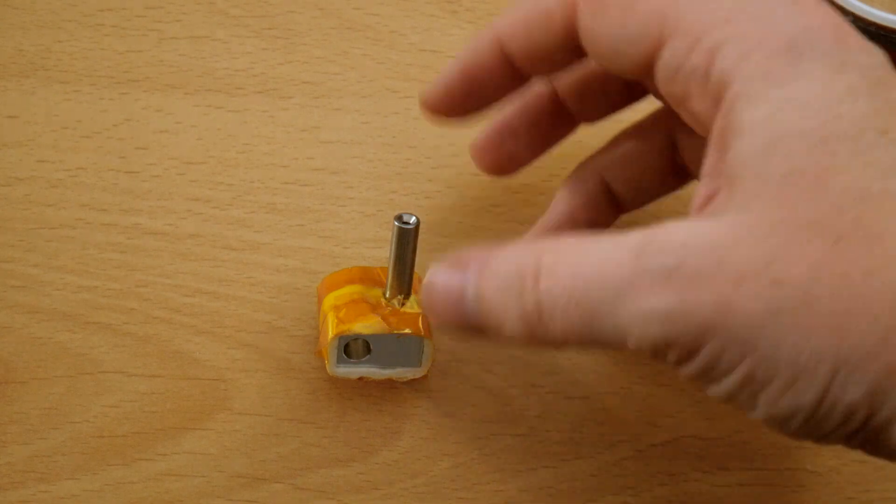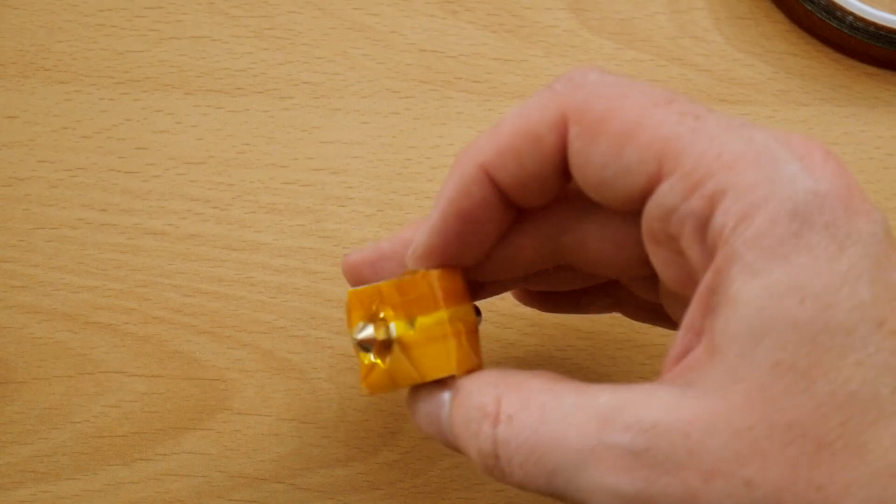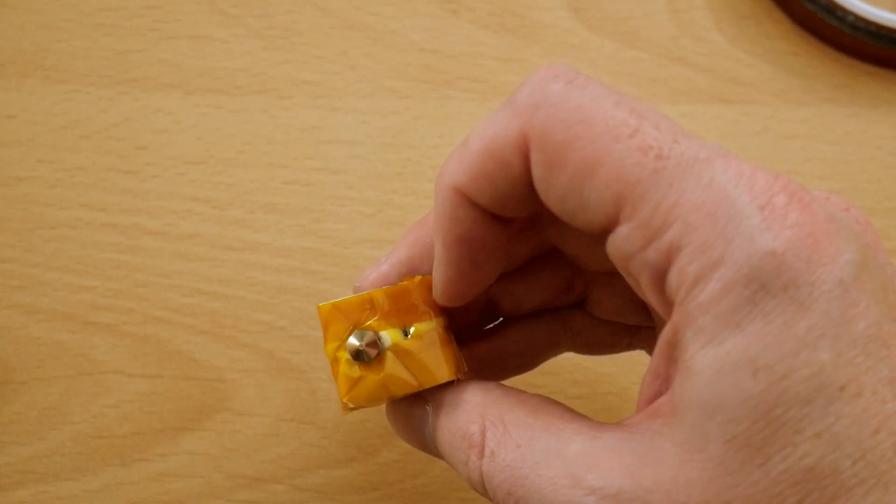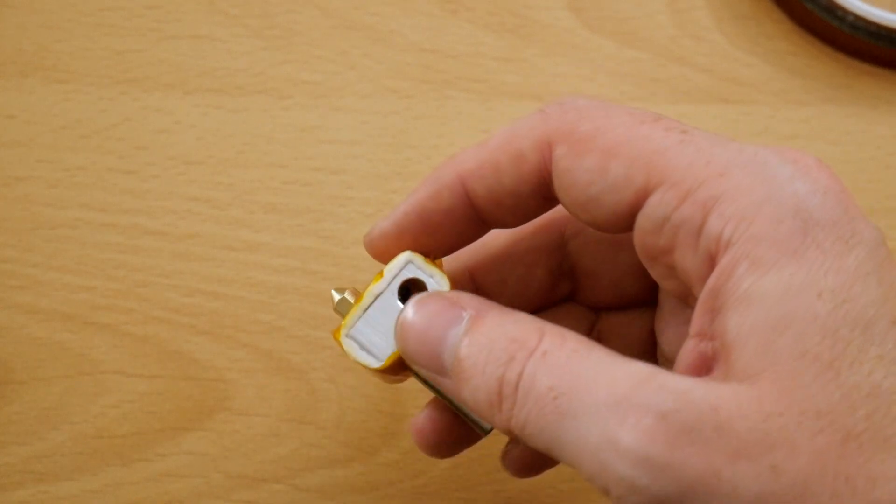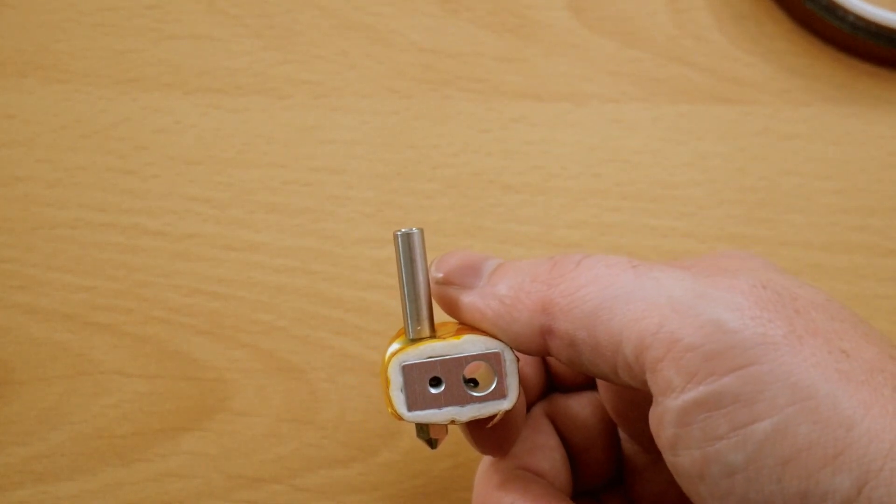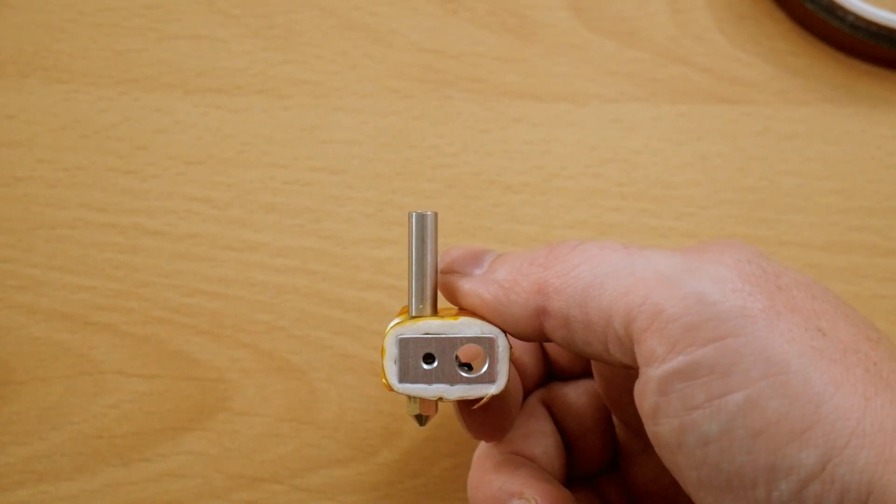So there we are. That's the part all kapton taped up. As you can see we've got it all covered. We've got the throat in, the nozzle in, and we've got the hole left here for the grub screw to tighten up. So everything is done. Now what we need to do is install this in the printer and get it aligned with the other print head. So let's hop on over and have a look.